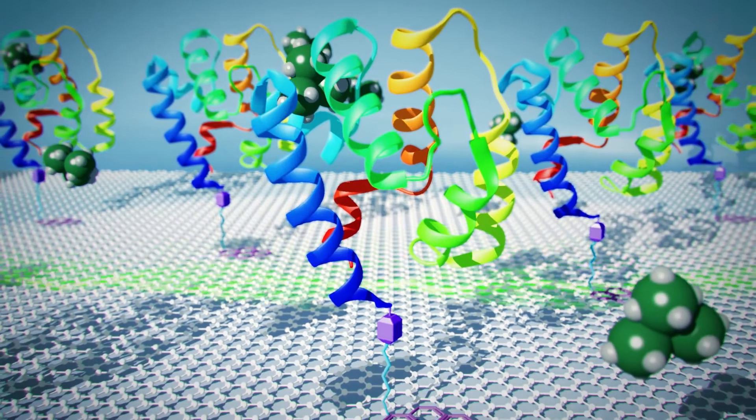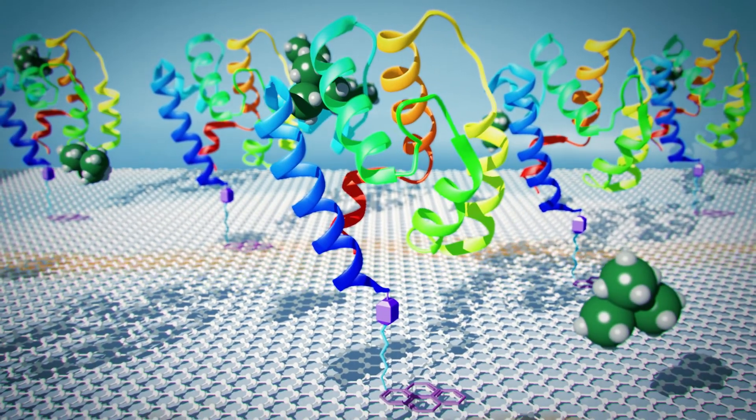Once we have our graphene layer, we need to attach relatively large biomolecules onto the surface, and this process needs to be done in such a way that the biomolecule itself stays intact and, most importantly, that the recognition of the analyte is still possible, so the orientation of the biomolecule really matters.